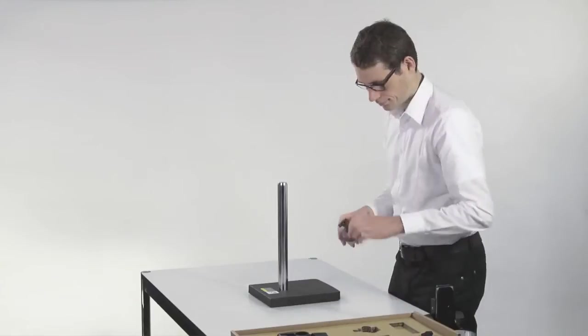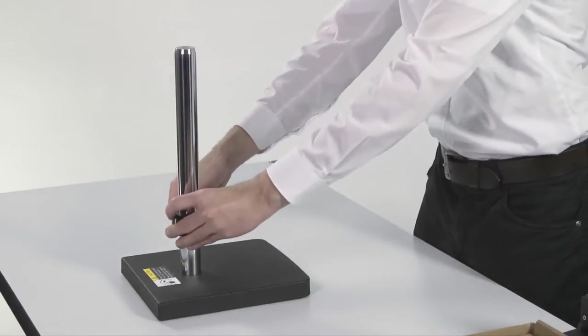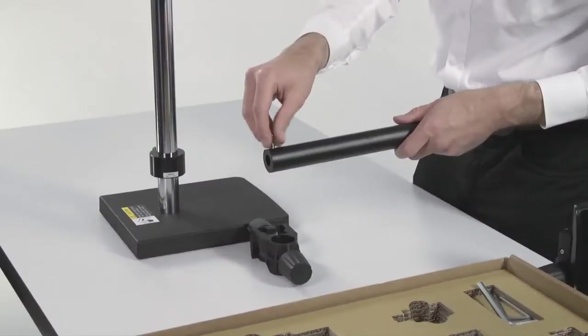Next, we install the safety ring. This helps ensure that your microscope system won't fall down onto your sample and damage the microscope or your sample.